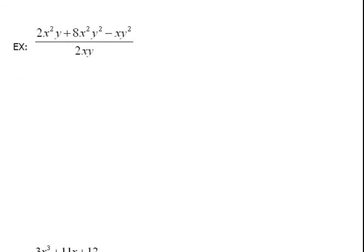We have this 2x squared y plus 8x squared y squared minus xy squared all over 2xy. What are we dividing by here? This 2xy is actually a monomial. It's one term. When we divide by a monomial, we have to do the shortcut version. So we don't do long division. We snuck one in there to see if you were paying attention.